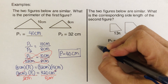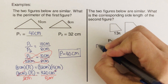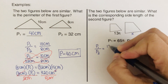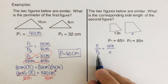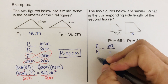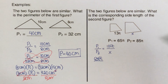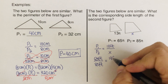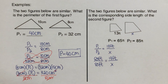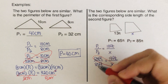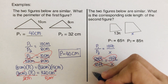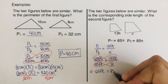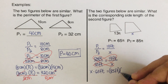Going through the same process: P1 over P2 equals the first side length over the second. So that's 13 feet over x feet. Writing in the values for P1 and P2 gives us 65 feet over 85 feet equals 13 feet over x feet. Then we cross-multiply.